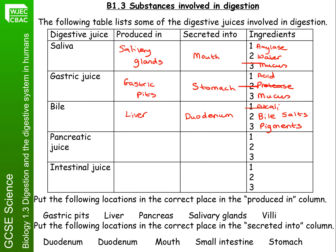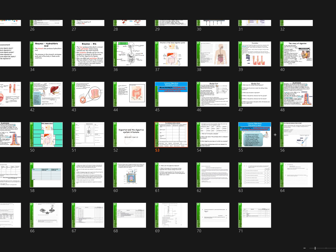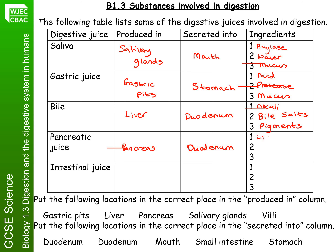The fourth digestive juice is pancreatic juice, which is made in the pancreas and again released into the duodenum. Within the pancreatic juice, you would have the three different enzymes: lipase, protease, and carbohydrases.